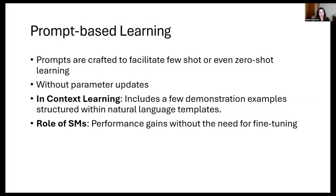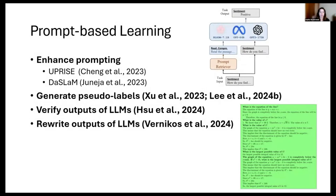The other piece probably relevant to all of us, especially if you're using the API primarily, is using small models in prompt-based learning. Prompt engineering generally is constructing prompts to guide frozen LLMs without parameter updates. In-context learning is including a few examples within the prompt. We could potentially use small models to augment the prompt retrieval or prompt selection process.